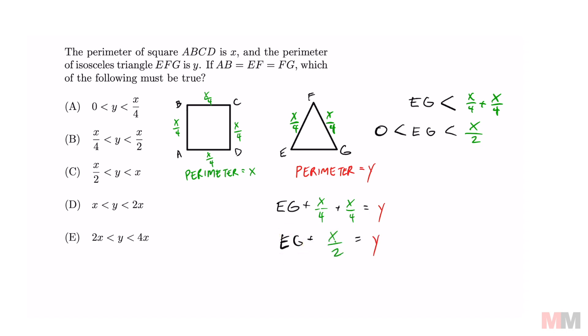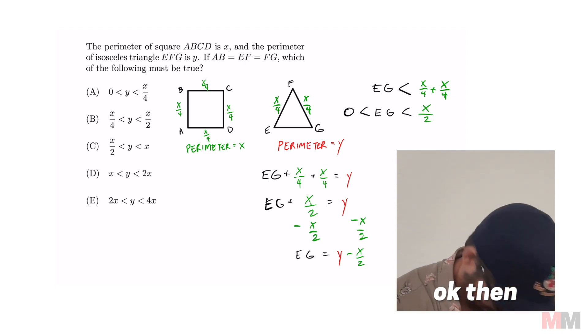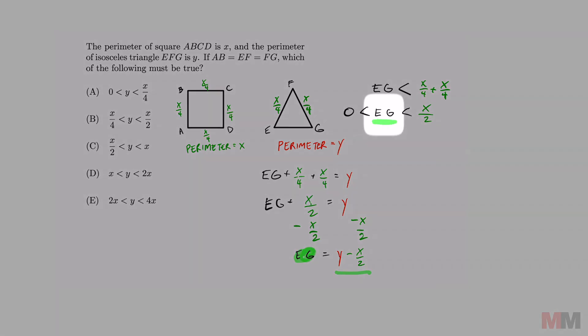We want to get EG by itself so we can substitute that expression right here. And all you have to do is subtract X over 2 on both sides. EG is going to equal Y minus X over 2.